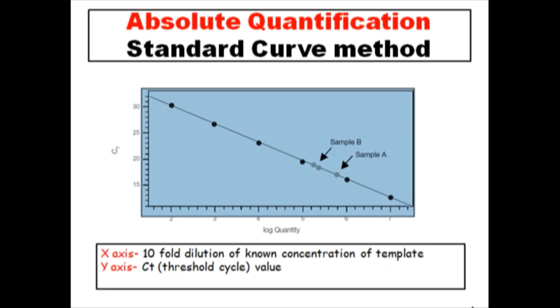The unknown samples and our standards are run in the same assay. After completion of this run we get this standard curve. Along the x-axis, logarithm of copy number of standards are plotted, and their respective Ct values are plotted along the y-axis.